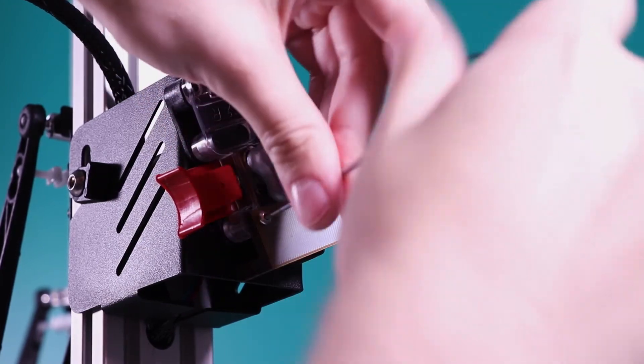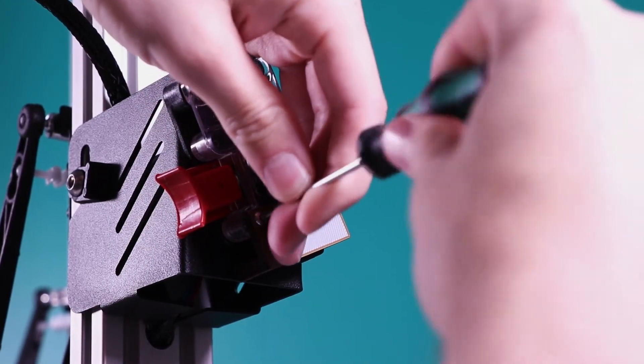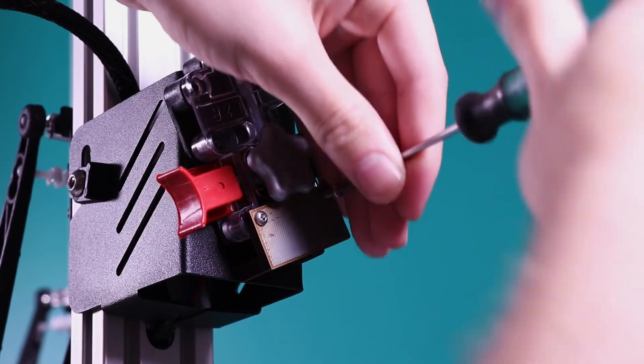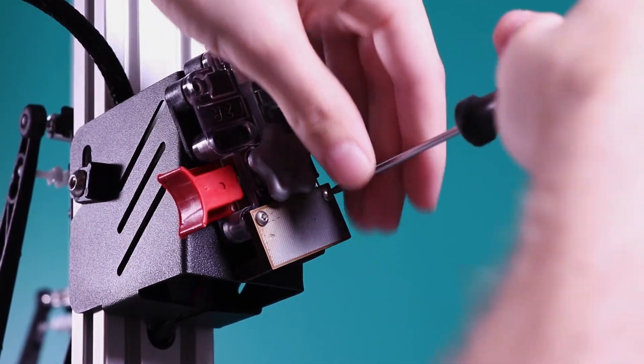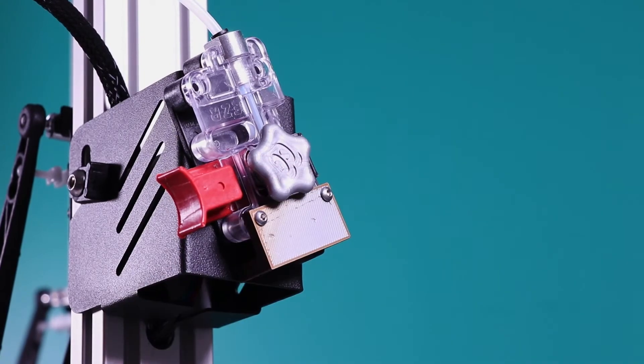You'll notice the rubber grommet. This makes inserting and removing the tube easy. If you wish to design your own extruder clip, please see the link in the description. It includes dimensions for the rubber grommet that is included with your Palette 2.